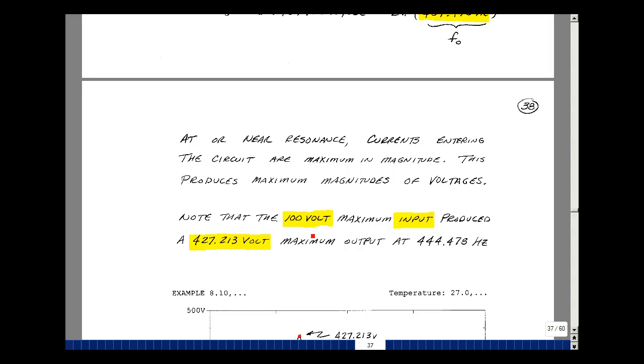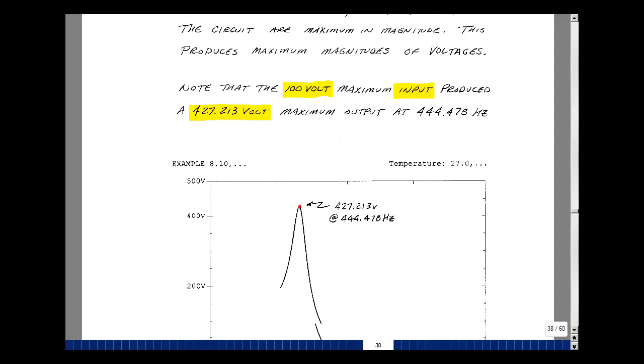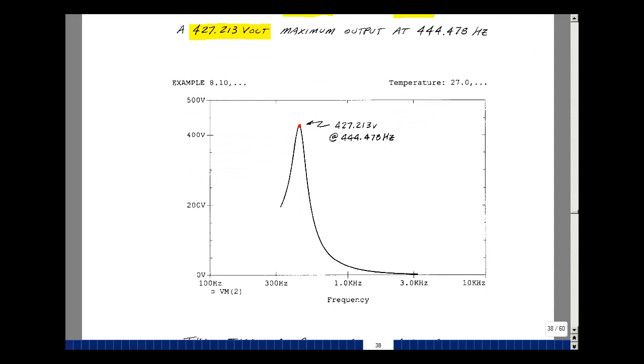Another interesting point to note is we had a 100 volt cosine function as our input. That was the magnitude of our phasor, but we're producing voltages that were as large as 427.213 volts, and this occurred at a frequency of 444.478 Hz. This is one of the interesting things about resonance.